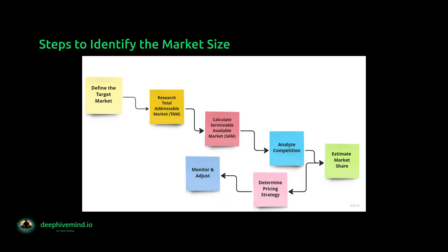Steps to identify the market size of a digital product. Here are the general steps. First, define the target market — determine the geographic region, industry, demographics, or other factors that define the target market. Second, research the total addressable market (TAM) — estimate the total market demand for the product or service by analyzing data from industry reports, government statistics, or market research surveys. Third, calculate the serviceable available market (SAM) — estimate the portion of the TAM that the company can realistically target and serve, considering factors such as market penetration, pricing, and distribution channels.